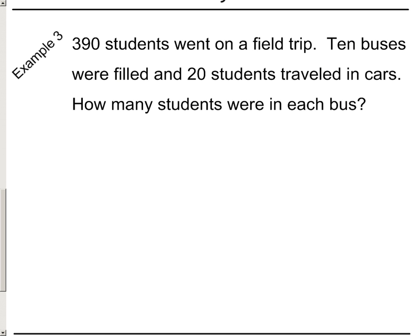I've got two more examples. Here's one that's a little bit different. Three hundred and ninety students went on a field trip, ten buses were filled, and twenty students traveled in cars. How many students were in each bus? Now, that is assuming that each bus carried the same amount of students. Okay, so we will make that assumption, and that's okay. We have three hundred and ninety total students. Okay.